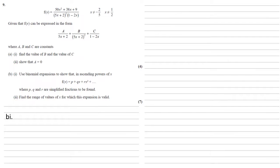Bi, we need to use binomial expansions to show that in ascending powers of x, f of x equals p plus qx plus rx squared, where p, q and r are simplified fractions to be found.